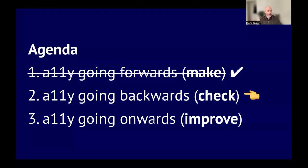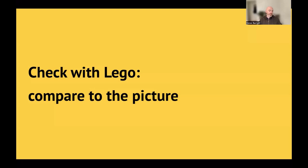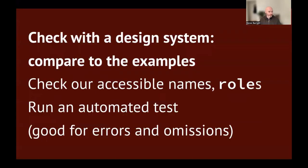Chapter two: Accessibility going backwards — Check. Checking with Lego is mostly about comparing to the picture. Checking with a design system is more about comparing to the examples. We probably want to check the accessible names and accessible roles of the thing we've made. One useful approach is to run a quick automated test, maybe with axe dev tools. Automated tests are good for catching errors — like a typo or using the wrong attribute — and omissions, like forgetting to give a field an accessible name or forgetting to provide a text alternative for non-text content like an image or a video.